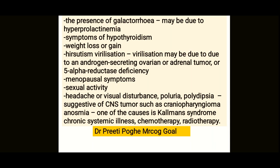Ask about sexual activity, headache, visual disturbance, polyuria, and polydipsia — these can suggest a CNS tumor like a craniopharyngioma. Ask about anosmia, as it is one of the causes of Kallmann's syndrome. Check whether the patient is suffering from any chronic systemic illness, chemotherapy, or treatment. All these history questions essentially correspond to the causes of primary amenorrhea.